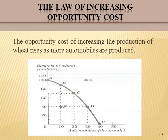Now we are going to see if the PPF demonstrates the law of increasing opportunity cost from the graph. Starting at point A: an additional 10,000 automobiles moves us to point B — the opportunity cost is the difference between 100 and 90, which is 10 million bushels of wheat. If the economy is at point B, the opportunity cost of an additional 10,000 automobiles moves us to point C.